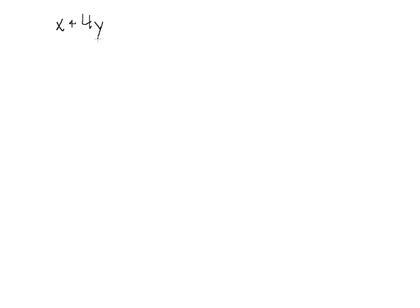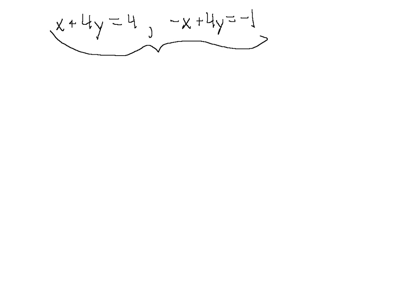Let's do a few more. We have x plus 4y equals 4, and minus x plus 4y equals minus 1. We could actually solve this simply by adding the equations, since we have opposite x coefficients. But since we want practice solving by subtraction, let's subtract these two equations — because notice we have 4y and 4y, identical terms in both equations.